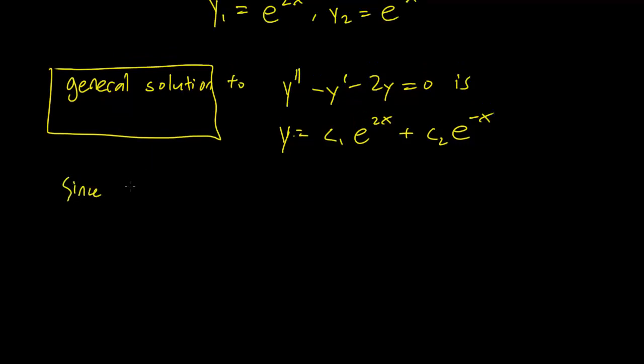So y(0) equals 4 and y prime of 0 equals 11. Let's use that information. Since y(0) is equal to 4, this basically means that x equals 0 and y equals 4. When y equals 4, we just plug that in to the general solution. We have 4 equals c1 e^0 plus c2 e^0. So it means that 4 equals c1 plus c2. That's the first step, the first piece of information we have.